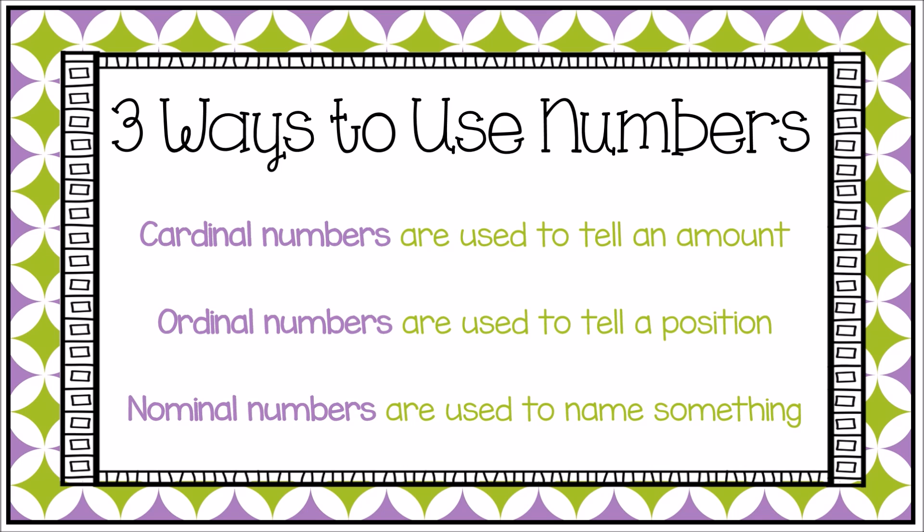And then there are nominal numbers. These are just used to name something — they don't represent a quantity or a position. For example, house numbers, phone numbers, the number on the back of your jersey. They're just used to represent a name.